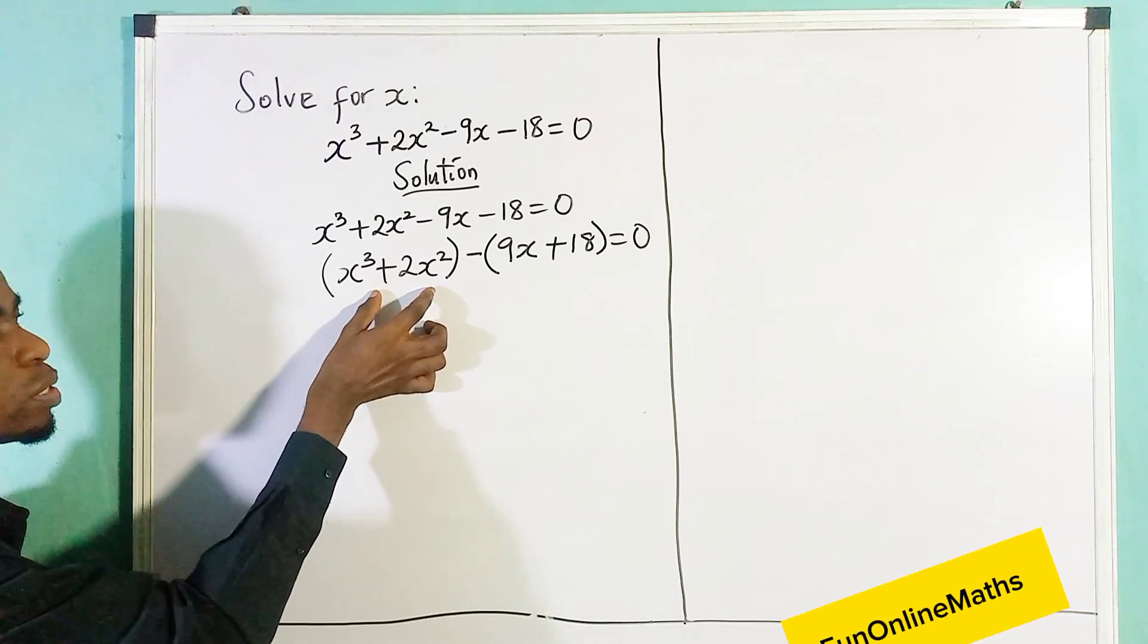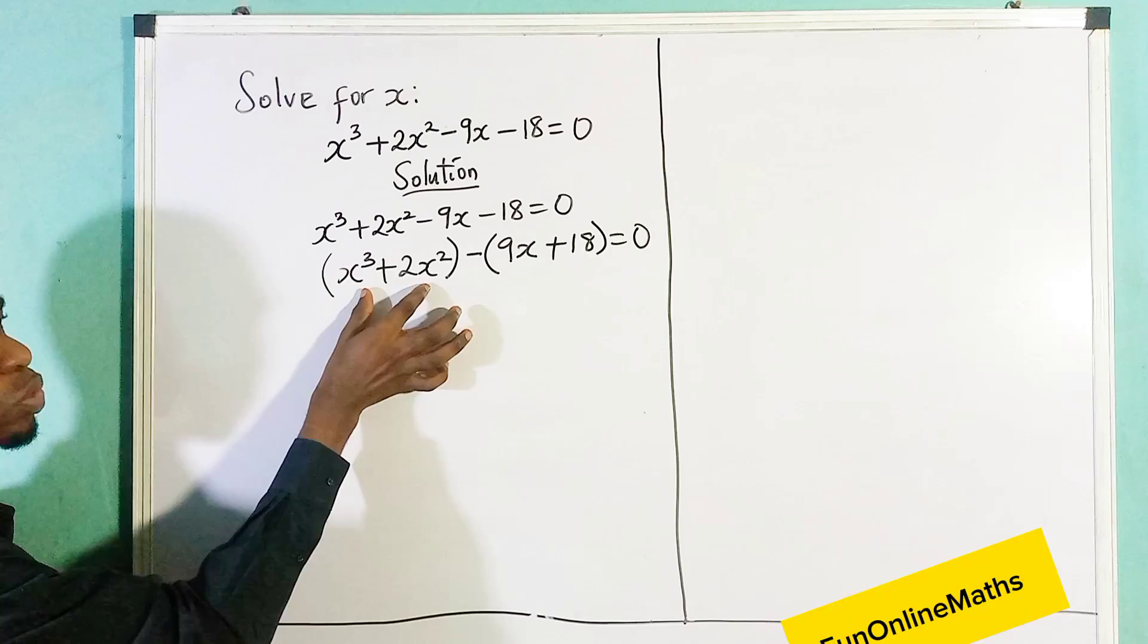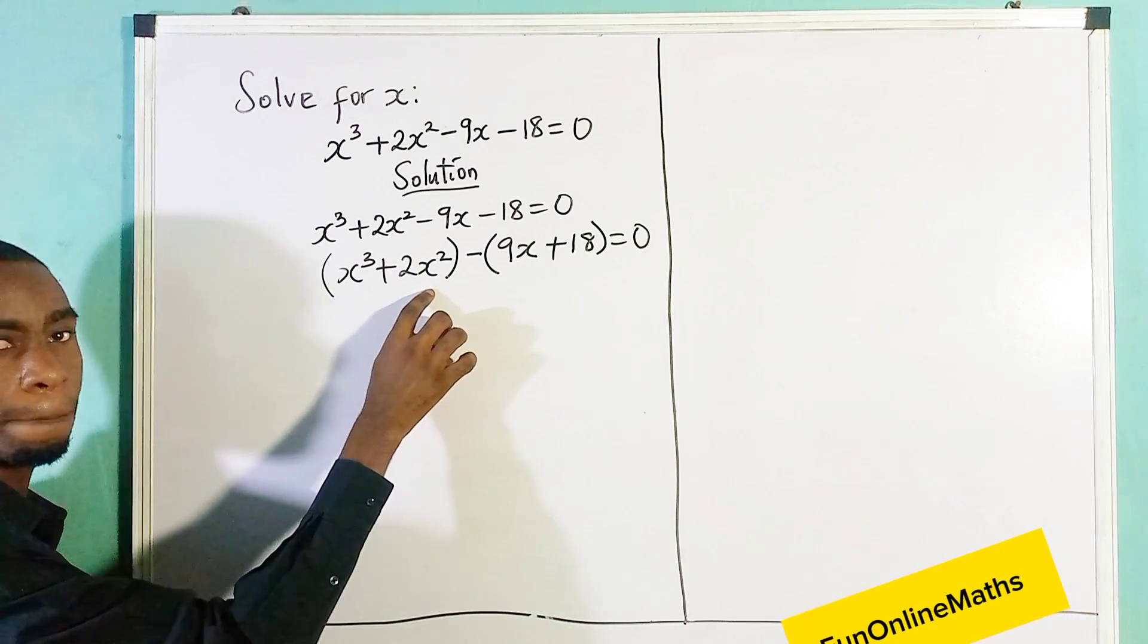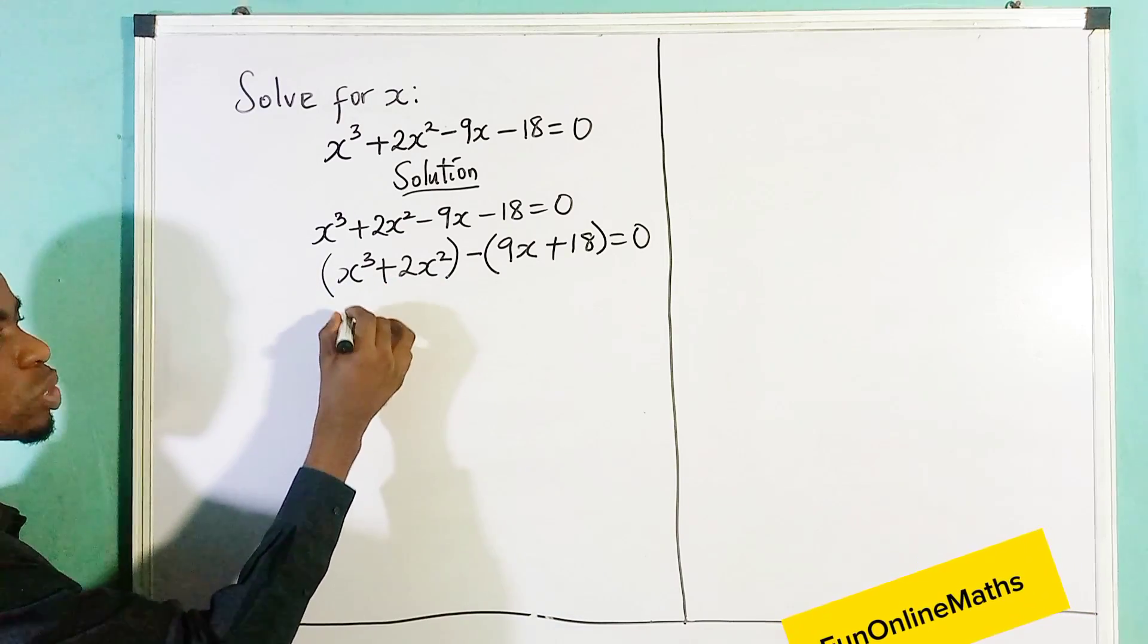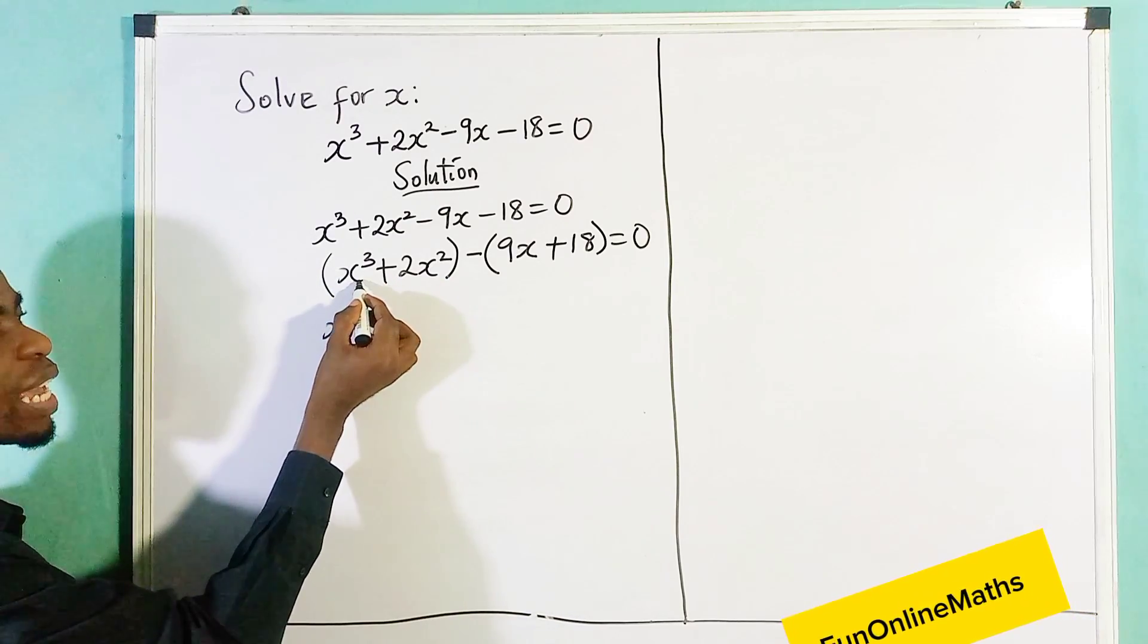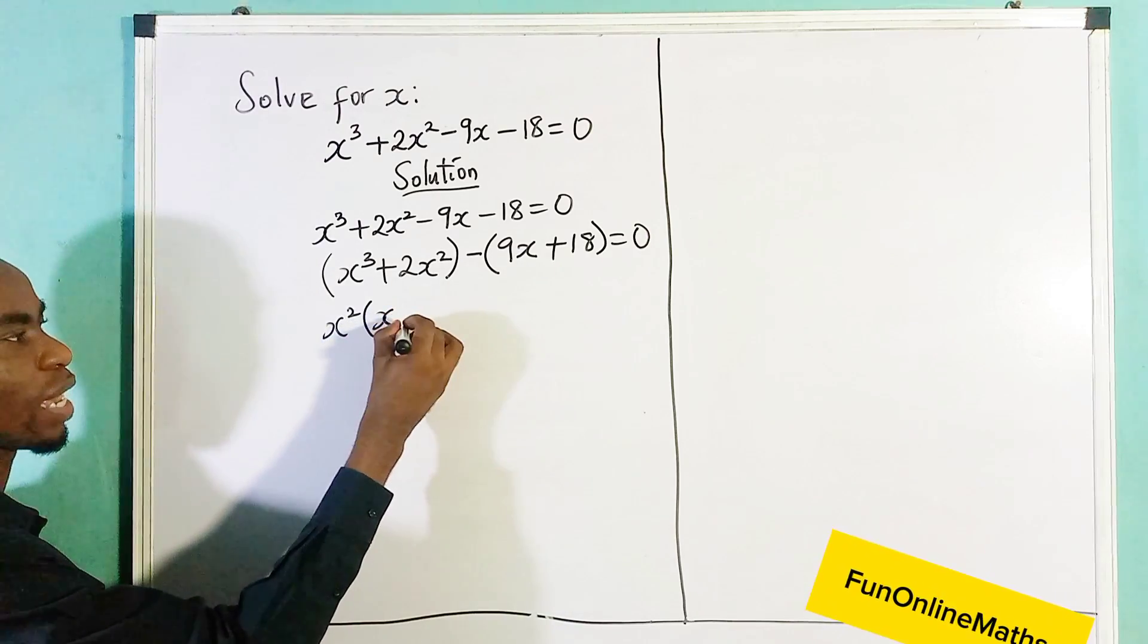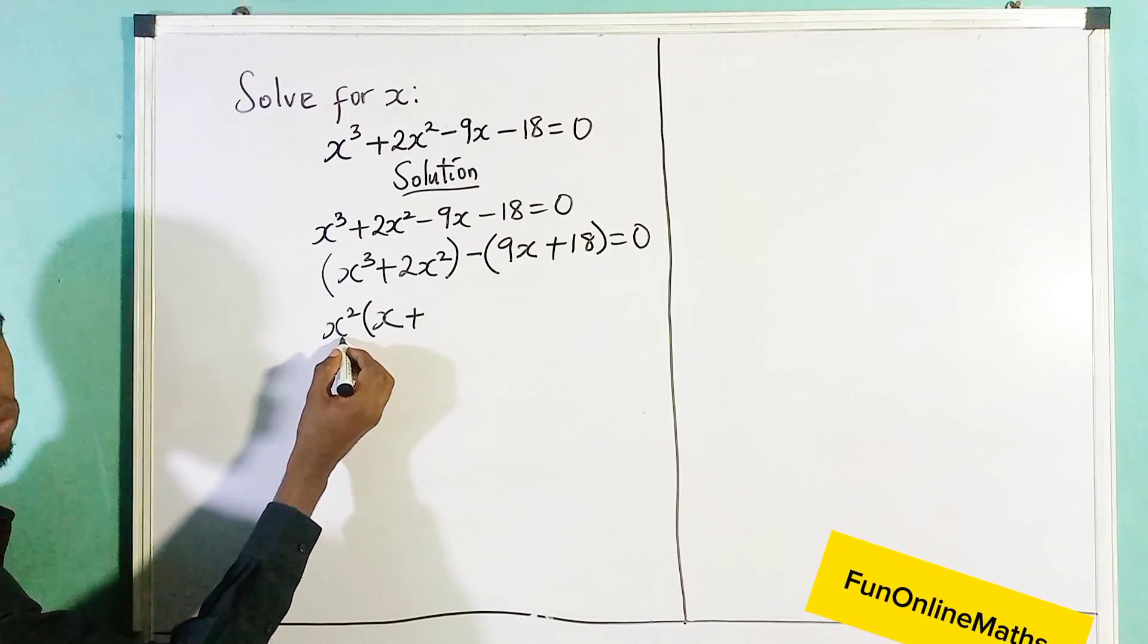When you're factorizing, you look for a factor that is common. What factor is common here? I think that's x². We can divide both sides by x². So this is x² into, if you divide x³ by x², we'll be left with just one x. So write x plus, if you divide 2x² by x², x² cancels out itself, we're just left with 2.